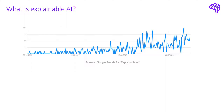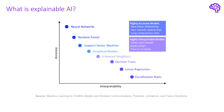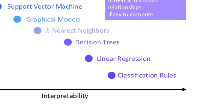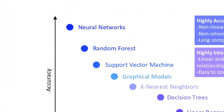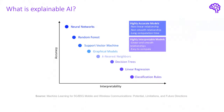Usually when building models from data a trade-off can be observed. Either we have simple linear models that can be easily interpreted by humans but might not lead to superb predictions for complex problems. Or we build highly non-linear models that provide a better performance on most tasks but are simply too complex for humans to understand. Neural networks for instance often have millions of parameters which simply exceeds human capabilities.